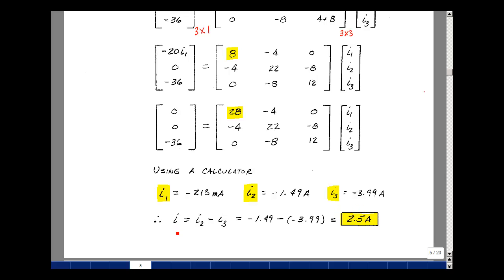Now the value of I above we showed was I2 minus I3, so a minus 1.49, minus a minus 3.99, and I get a plus 2.5 amps. And this is Supplemental Problem 4.5.